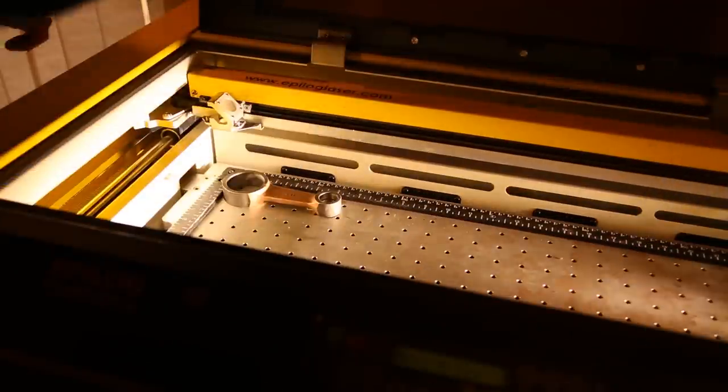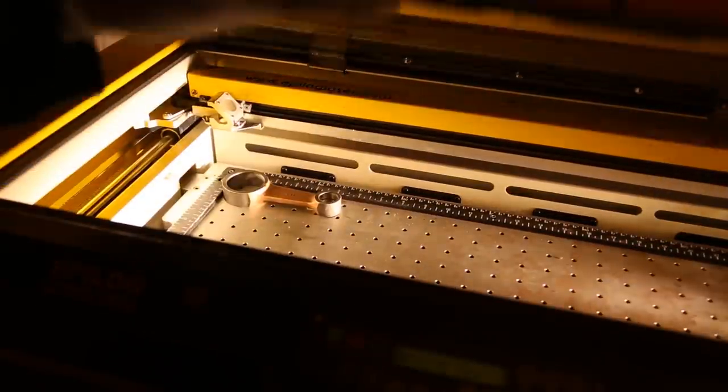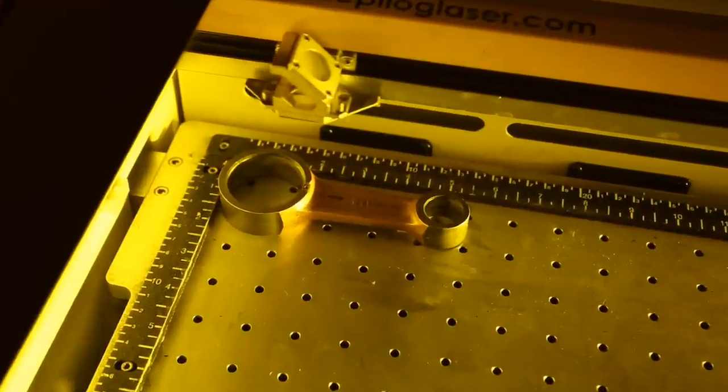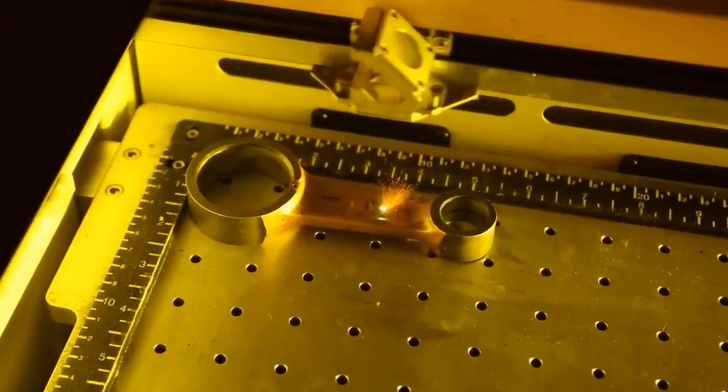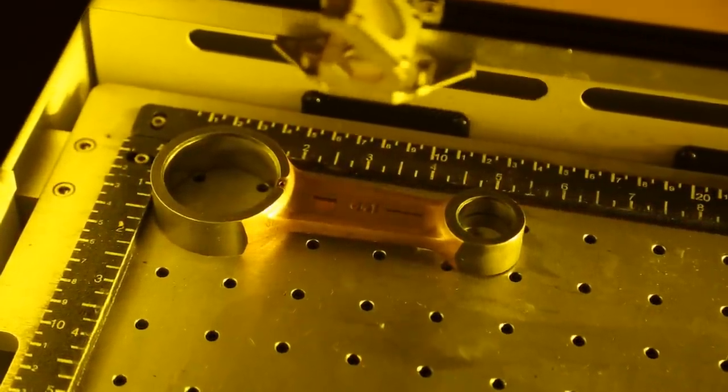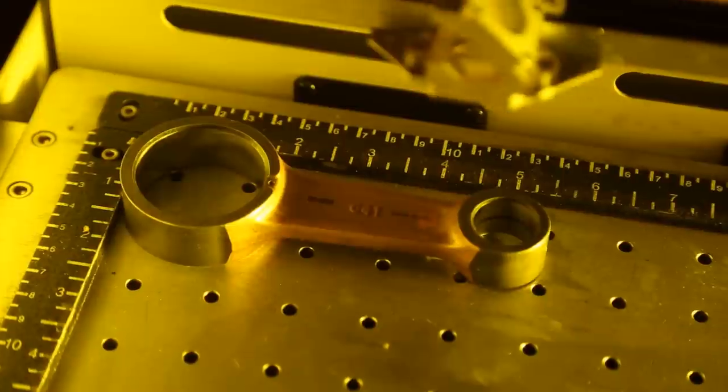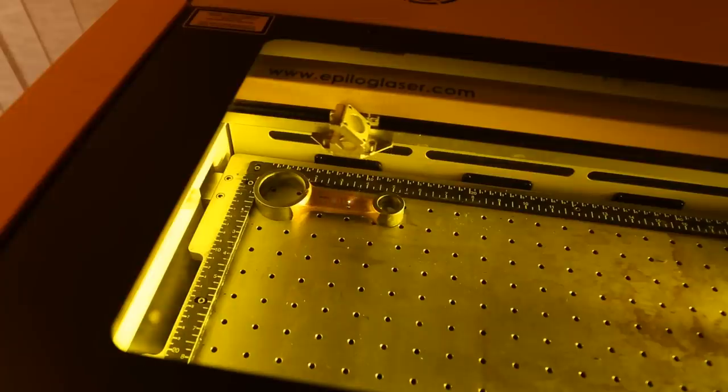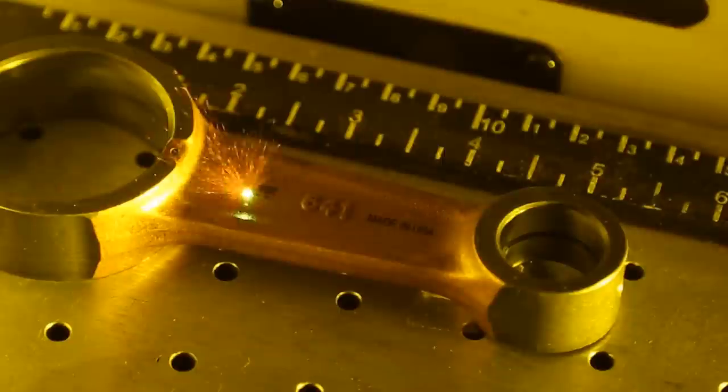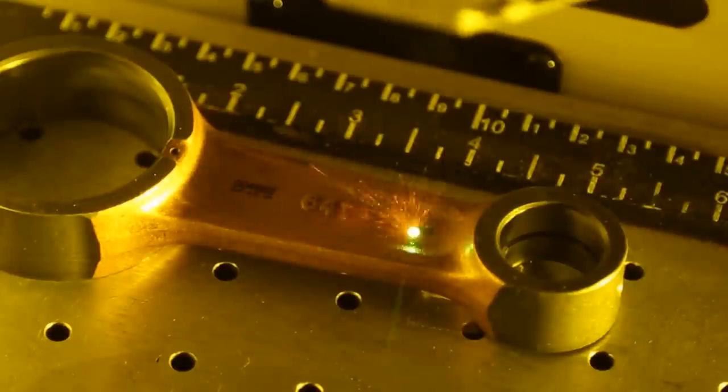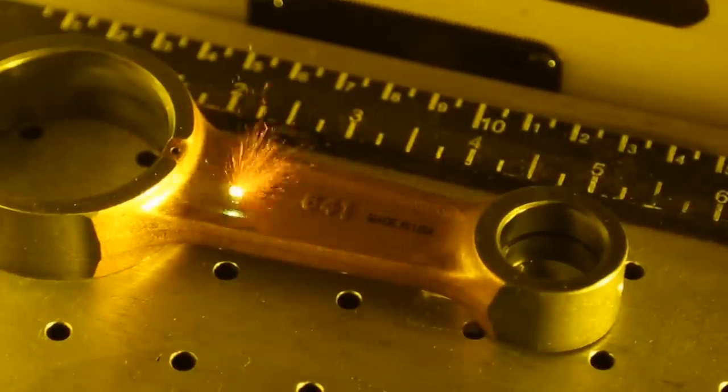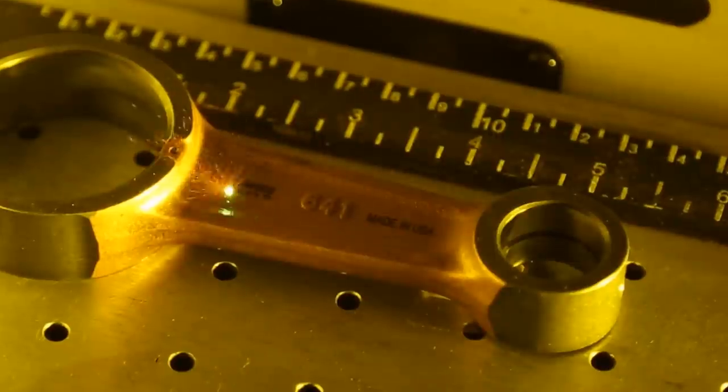After all the machining is done and the rods have gone through the anti-rust bath, each part gets laser etched with the production batch number, part number, and most importantly, made in USA on the beam of the rod. The batch number can be used to identify every aspect of the rod's production cycle. What day it was made, who made it, and when it was finished. The part number is used to identify the rod, whether in the warehouse or after it has been installed in an engine.